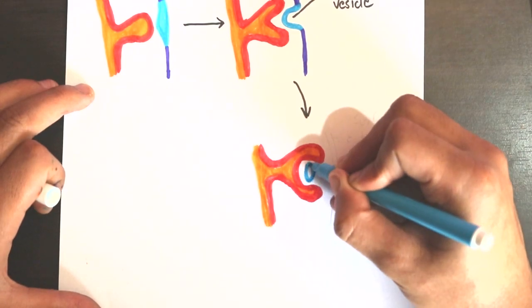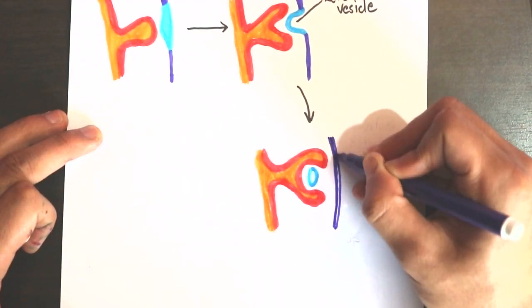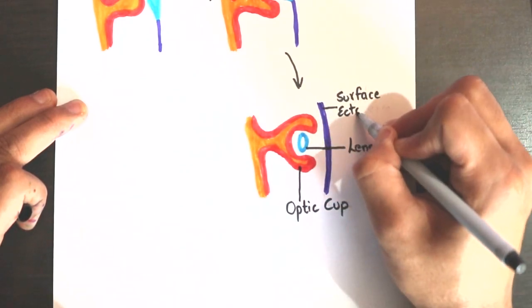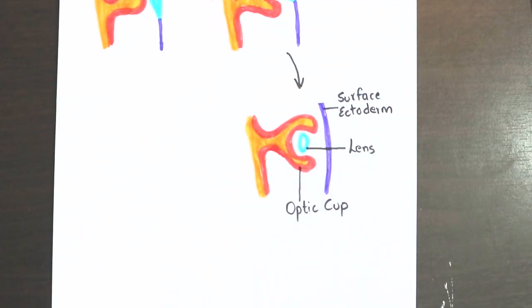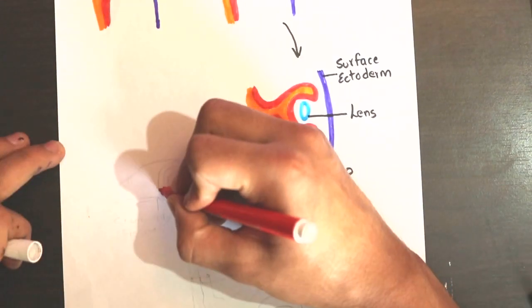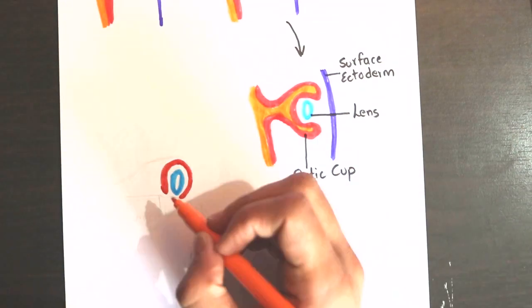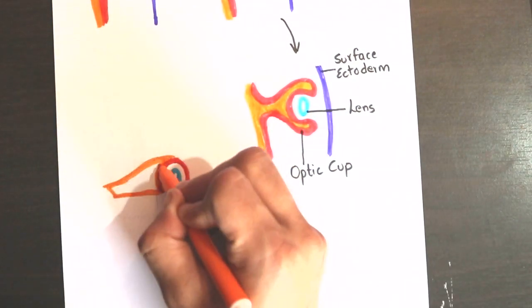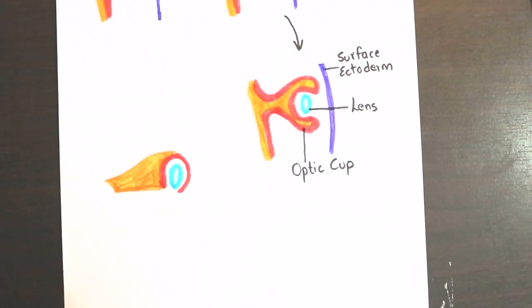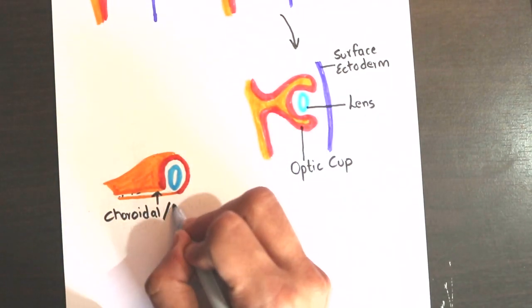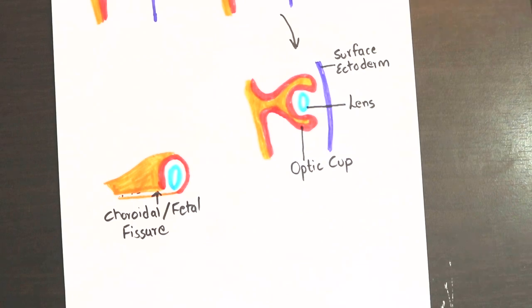Due to invagination by the lens, the optic vesicle gets converted into a cup-shaped double-layered structure called the optic cup. However, the lens is not covered by the optic cup below. This deficiency extends to some distance along the inferior surface of the optic stalk and is called the choroidal fissure or fetal fissure.